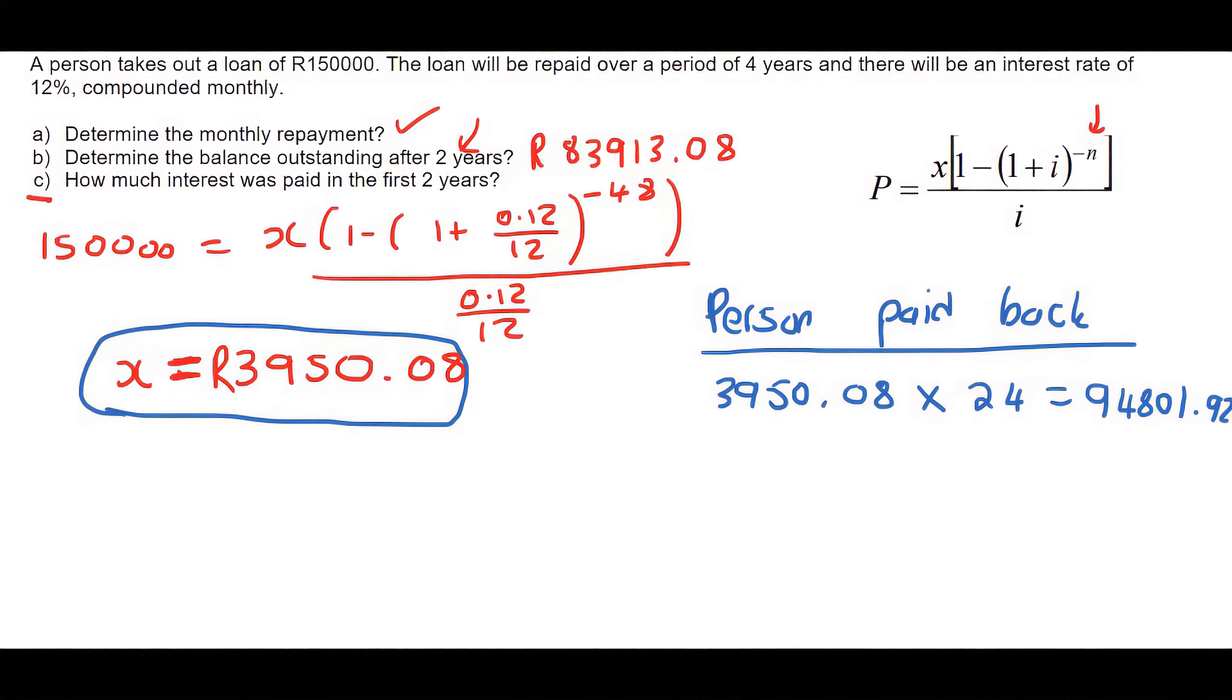Now, we want to see, by how much has the loan decreased? So the loan in the beginning, the loan was worth 150,000 Rand. After two years, how much do we still owe the bank? Well, that's the balance outstanding.